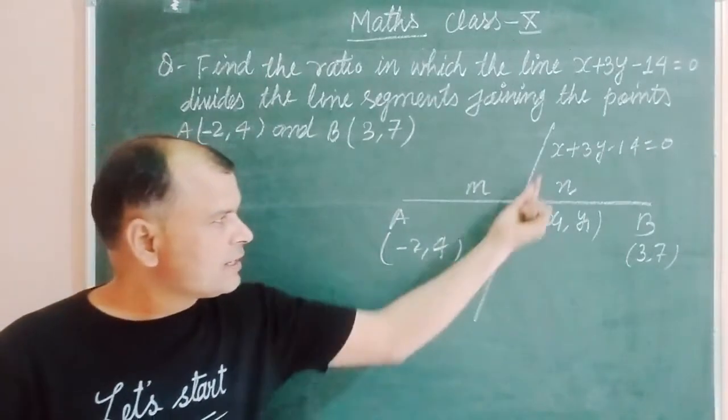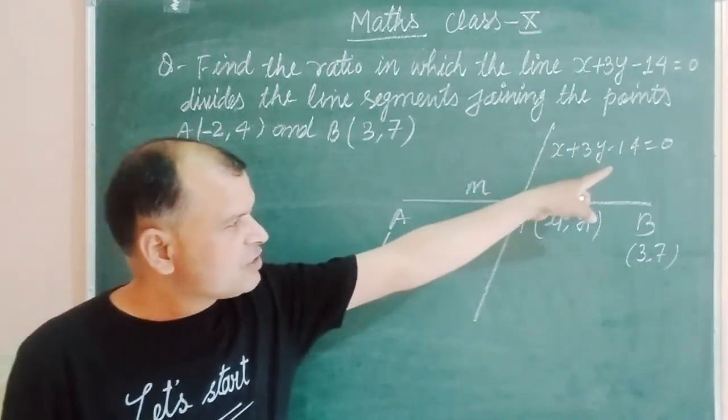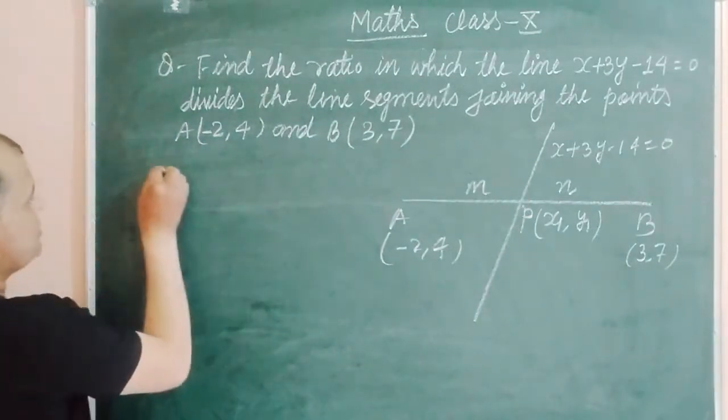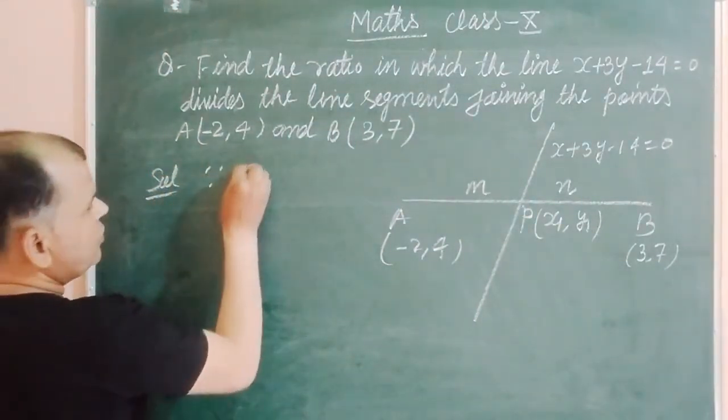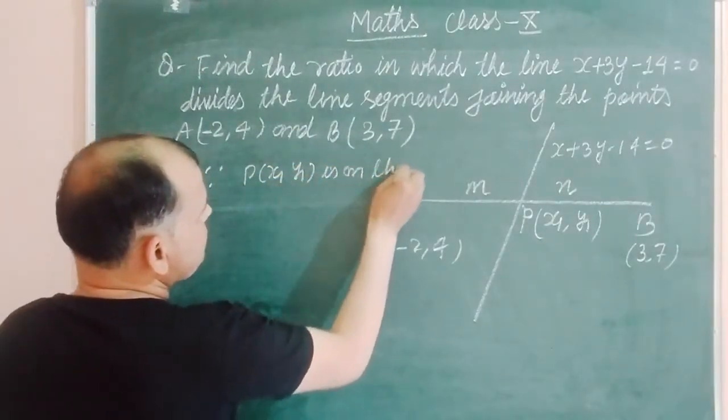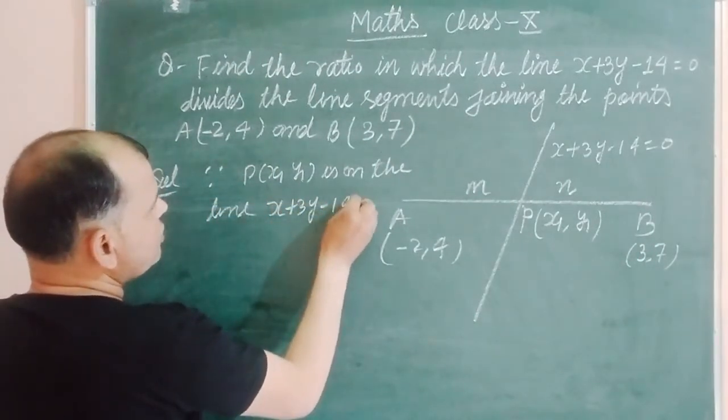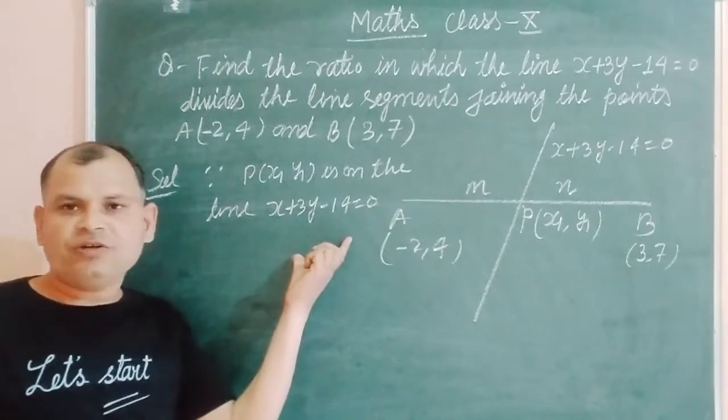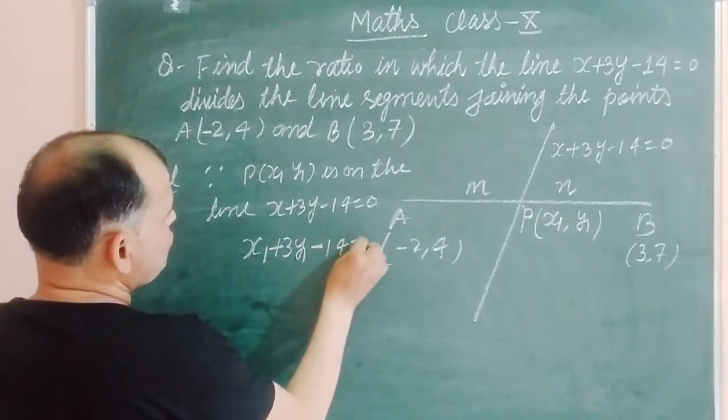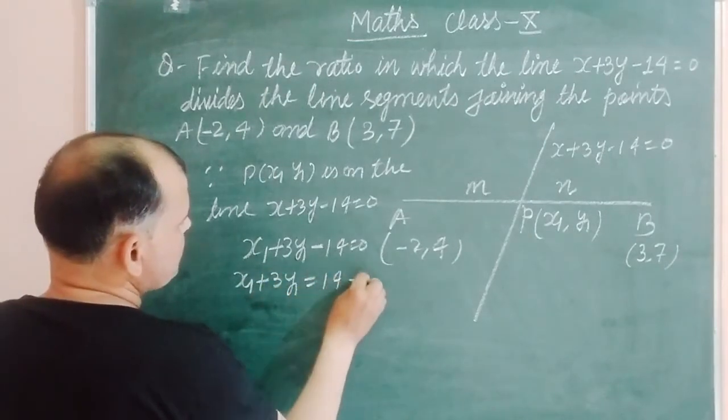Now you are looking here that (x1, y1) is on the line x plus 3y minus 14 equal to 0, then it satisfies the line. Since P(x1, y1) is on the line x plus 3y minus 14 equal to 0, we have x1 plus 3y1 equal to 14. This is our first equation.